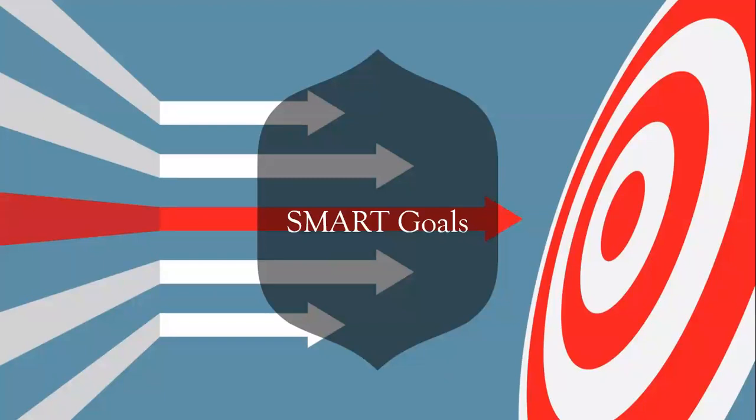As you can see, SMART is capitalized because each and every letter signifies something. The S stands for Specific, the M stands for Measurable, the A stands for Achievable, R stands for Realistic, and finally, the T stands for Time Specific.